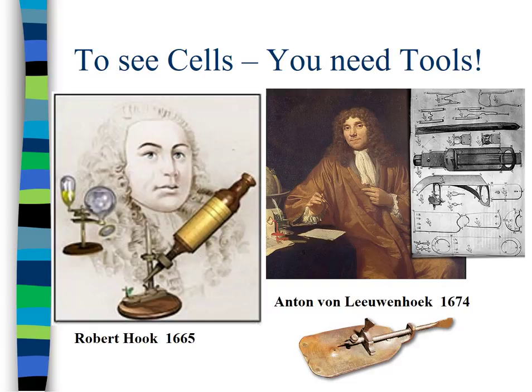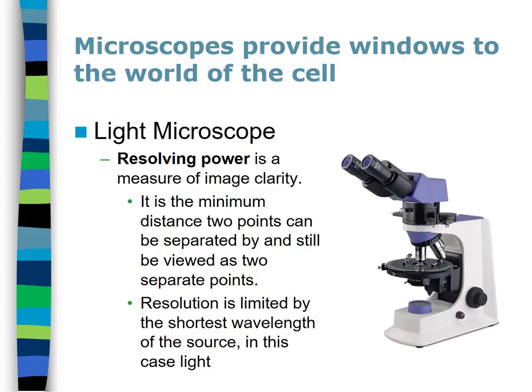Today we use a couple of different types of microscopes. One is the light microscope, which uses light to look at an object. A key term is resolving power — a measure of image clarity. It's the minimum distance two points can be apart and still be viewed as two separate points. When objects are very close together, the light wavelength is larger than the distance between them and we can no longer distinguish them.